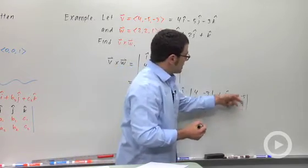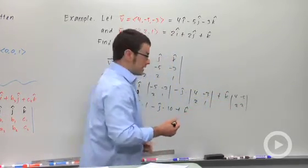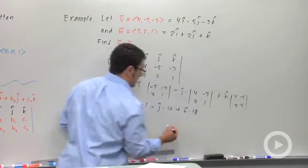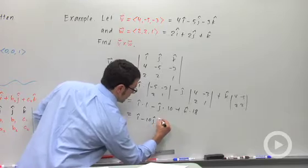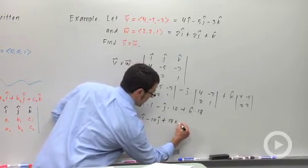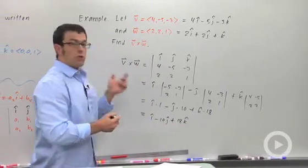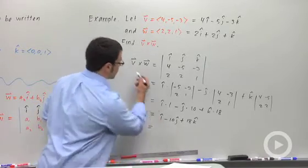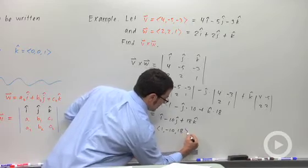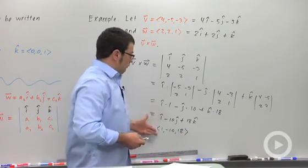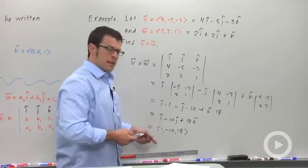Plus K. I have 8 minus negative 10, 8 plus 10 is 18. So the answer is I minus 10J plus 18K. And of course you can put that into regular component form if you like. V cross W is 1, negative 10, 18. So depending on what form your teacher wants, either of these is an acceptable answer.